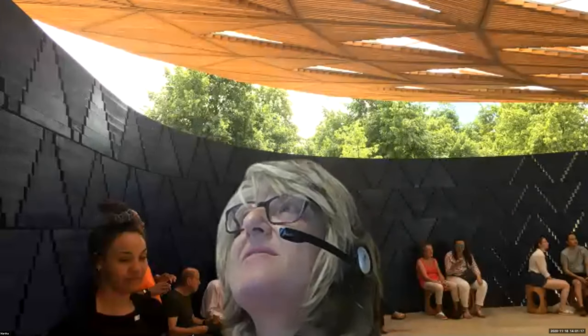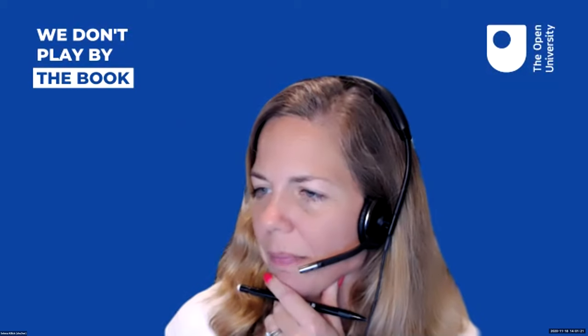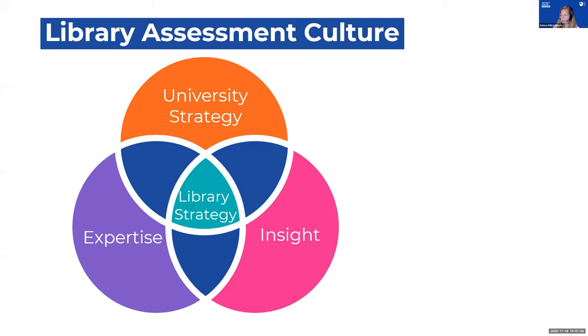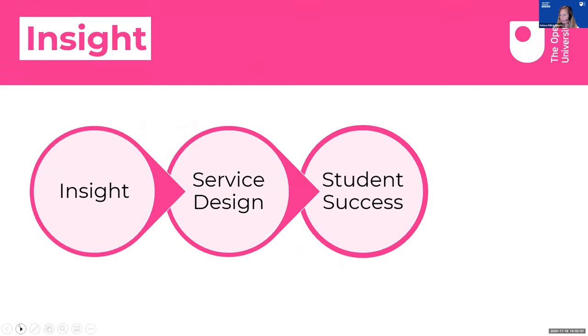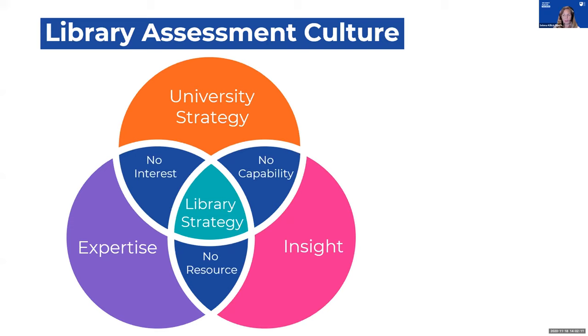Selina, can you show the Venn diagram slide? A comment came through that people liked it. The diagram shows intersections: where university strategy and expertise exist but no user insight, there's no interest in the service; where expertise and insight exist but don't align to university mission, no resources to drive strategy forward; where strategy and insight exist but expertise is lacking, no capability to deliver. Questions arose about situations where brilliant ideas exist but users aren't yet aware of them, and about how to address lack of capability — for example, not enough data management people. How do you address the no-capability or no-resource quadrant?